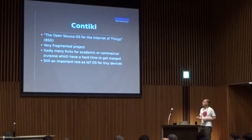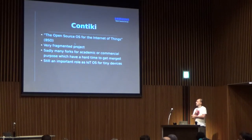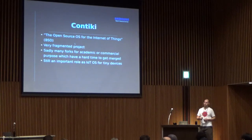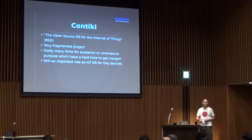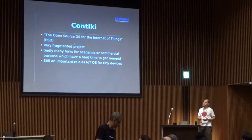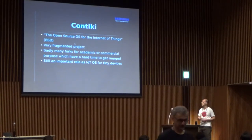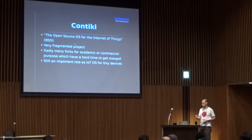Contiki is a bit more complicated — it's an older project and very fragmented. There are many forks for academic or commercial purposes, and merging contributions back is difficult. It got better with Contiki 3.0, but before that it was scattered across various Git trees. It's still an important operating system because many researchers use it to validate theories, and a number of vendors use it in products — so it's something we still need to support.